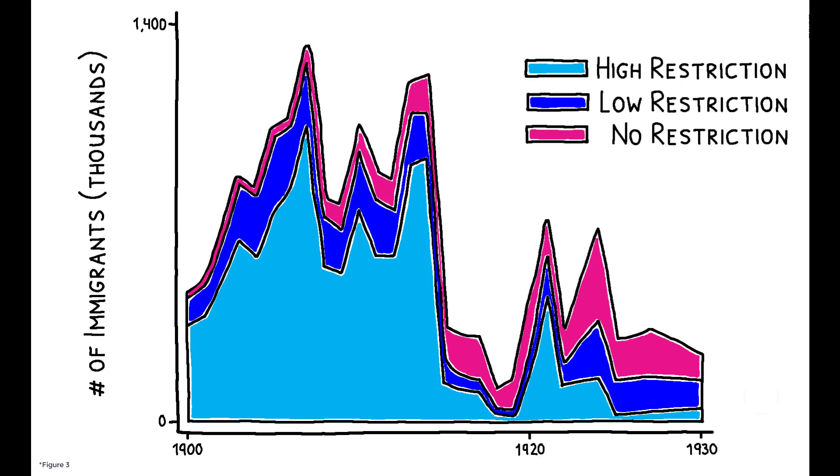This figure shows the differential impact across origin countries. While high-restriction countries accounted for around 70% of total immigration flows before the new policy, this number fell to 15% in the subsequent period.